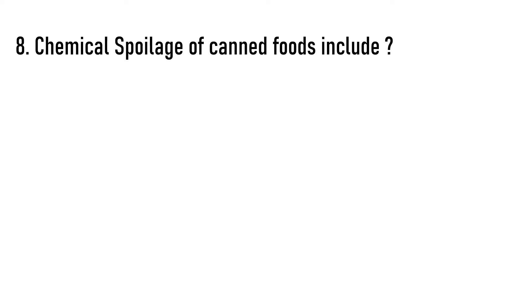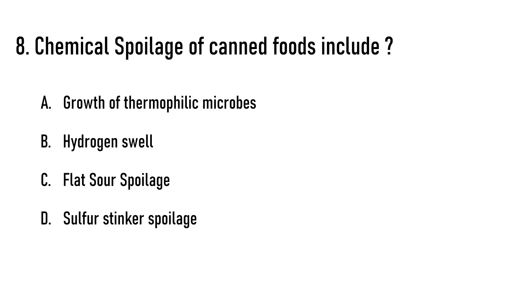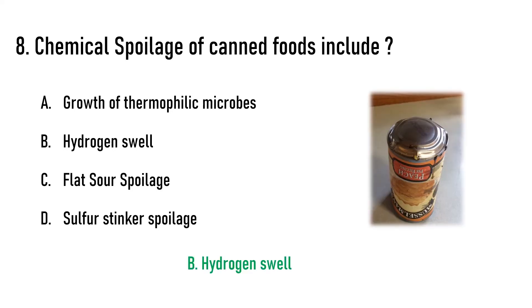Next question: Chemical spoilage of canned foods includes? Options are: A) growth of thermophilic microbes, B) hydrogen swell, C) flat sour spoilage, D) sulfur stinker spoilage. The correct answer is option B, hydrogen swell. Don't get confused with hydrogen swell and sulfur stinker spoilage — both involve chemicals, but sulfur stinker spoilage is caused by bacteria, so it comes under microbial spoilage.